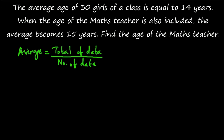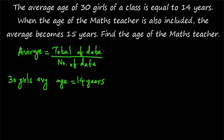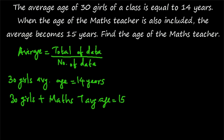So here, what is given? For 30 girls, the average age is 14 years. When the math teacher is also included, the average age changes to 15 years. Then what is the age of the math teacher? This is the question.